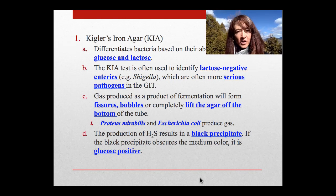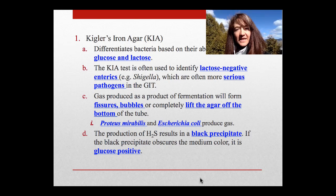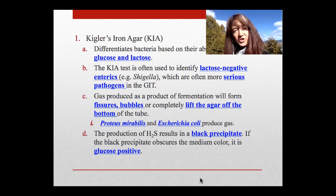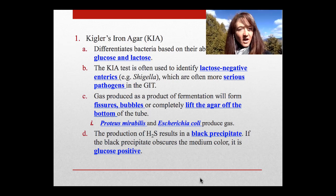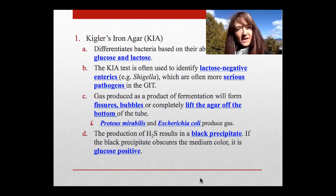Let's talk about Kligler's Iron Agar and come back to our KIA tubes. Remember, the KIA might try to do just too many things at once. It differentiates bacteria based on their ability to ferment glucose and lactose. An organism that can ferment glucose will burn through it quickly, using it all up, and then move on to the lactose. Organisms that can use the lactose will do so — it's present in excess, so the tube will stay yellow over yellow.